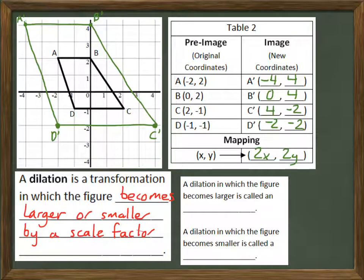We have some terms for when a dilation makes the figure larger and when a dilation makes the figure smaller. A dilation where the figure becomes larger is called an enlargement. That's what we just did. When it becomes smaller, the dilation is called a reduction. To reduce usually means to get smaller.